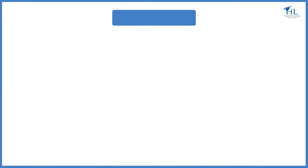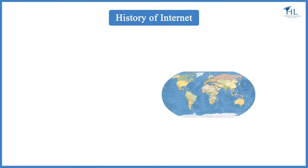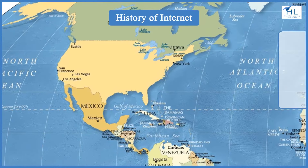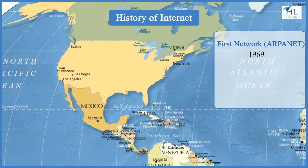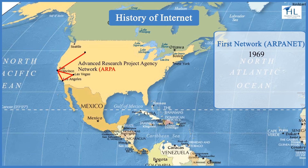It is interesting to know how the internet was started. In 1969, the U.S. Defense Department set up a research experiment called Advanced Research Project Agency Network, ARPANET. They designed a network of four computers to exchange and share their data.